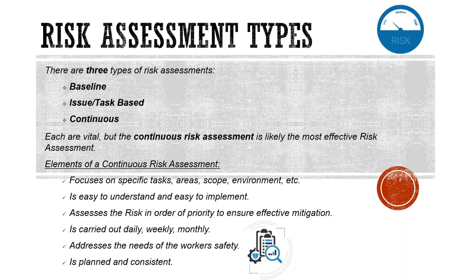The continuous risk assessment helps us carry out risk analysis daily, weekly, and monthly — it's an ongoing management of our actual risk. It also addresses the needs of the workers, which is extremely important and often overlooked. We want to look at the job as a whole, but occupational health and safety is focused on those performing the tasks — those getting their hands dirty. We want to keep you safe, and it is planned and consistent.